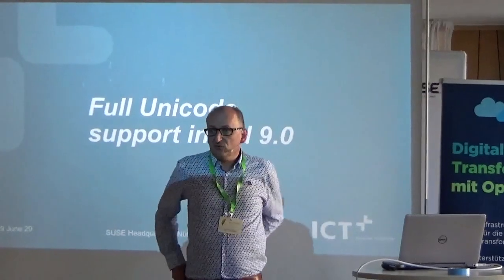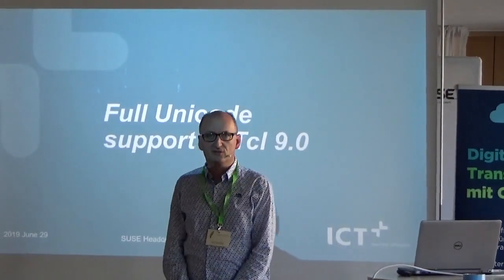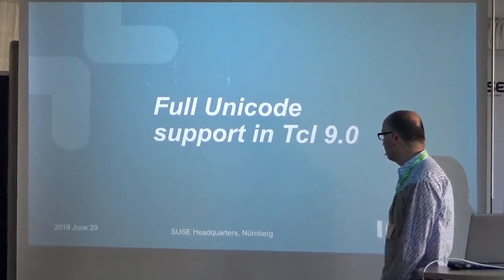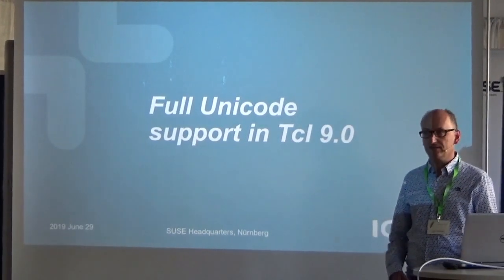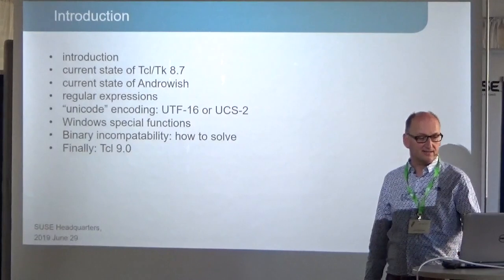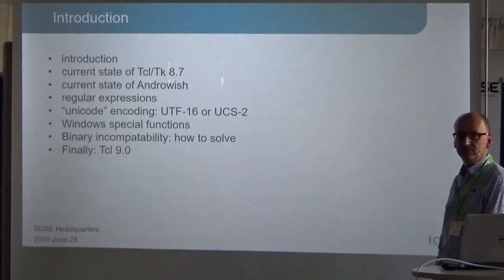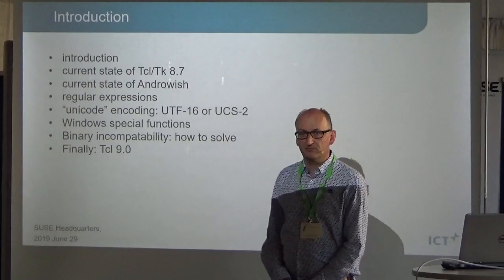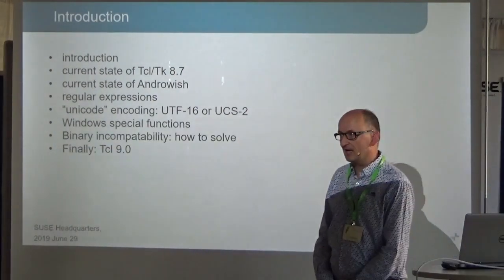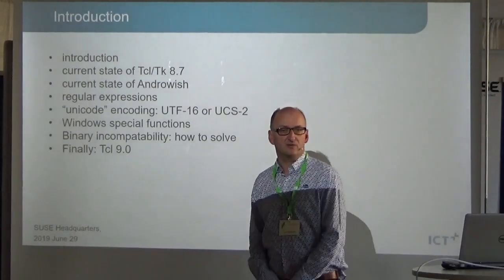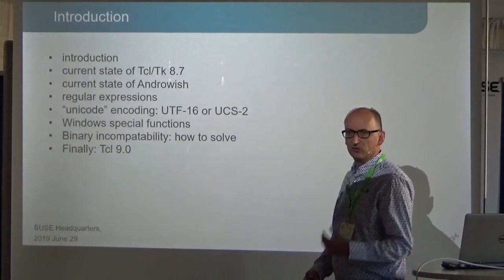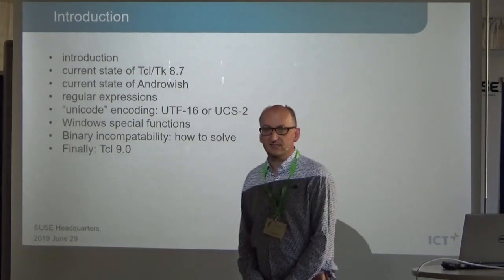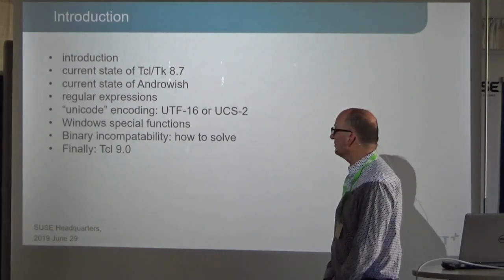What I would like to talk about is full Unicode in Tcl. There has been some development lately in 8.6 and 8.7 doing that, and I want to show you the status and what the ideas are on how to continue. So what's the current state of Tcl/Tk 8.7? How much of the full Unicode — code points higher than 65,000 — is supported? The original Unicode two or three only had that number, but later it was extended.